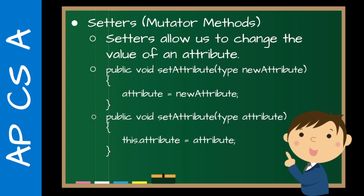Setters are also referred to as mutator methods, because mutate means to change. Setters allow us to change the value of an attribute. There are two standard ways of doing that. You'll see: public void setAttribute(type newAttribute), then attribute equals newAttribute. So just like setName(newName), name equals newName. This is one way of doing it. I do this because it's very clear. You'll see a lot of times, for example with setName, you'll see type n, and then name equals n. I personally don't like that. I really emphasize to the students that variable names should be extremely clear — I shouldn't have to guess what a variable is. So what's n? Is that a number?